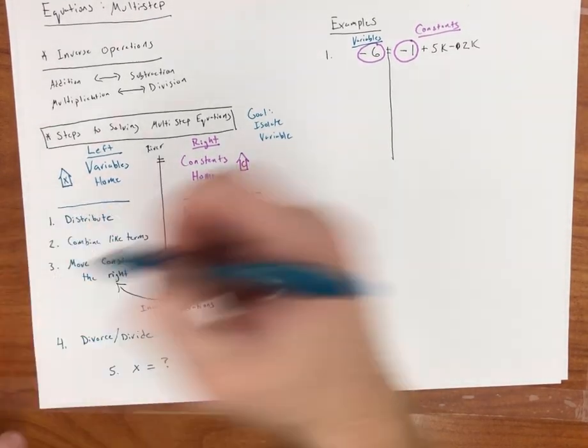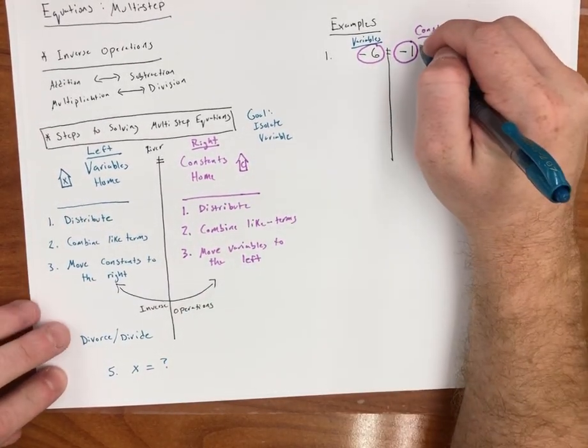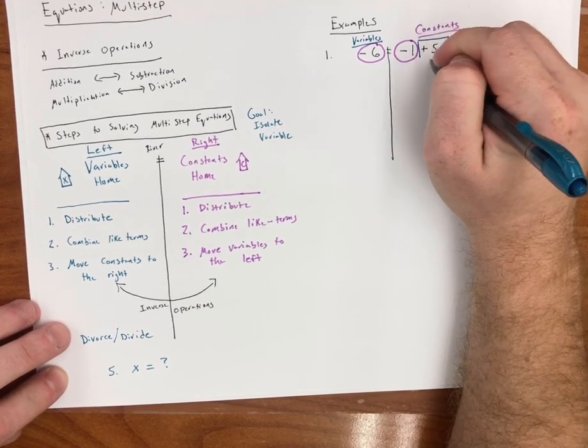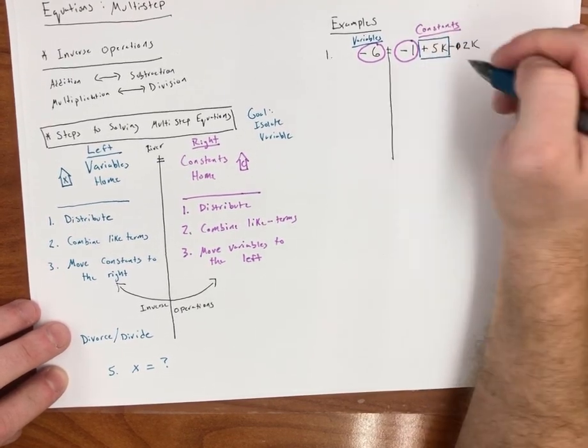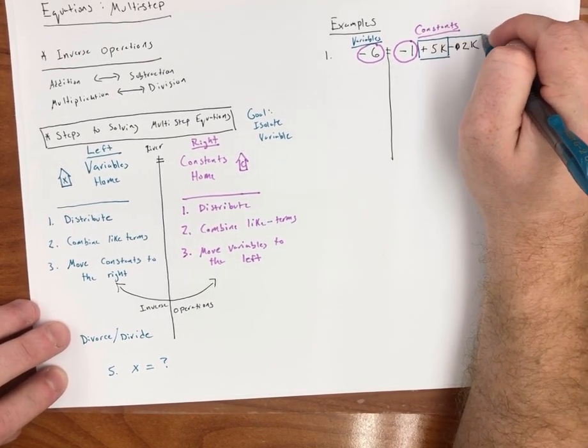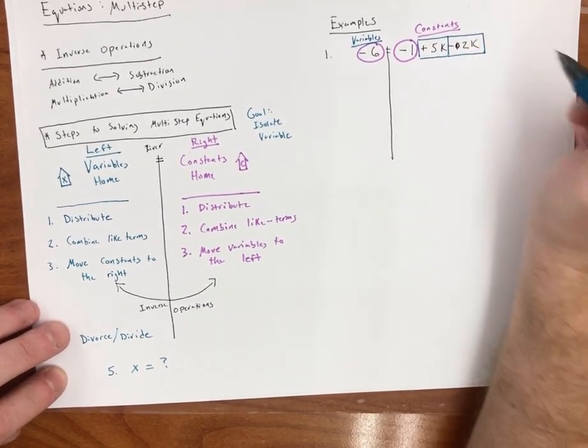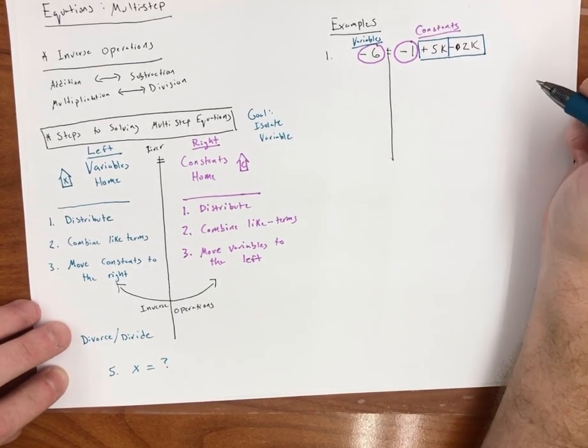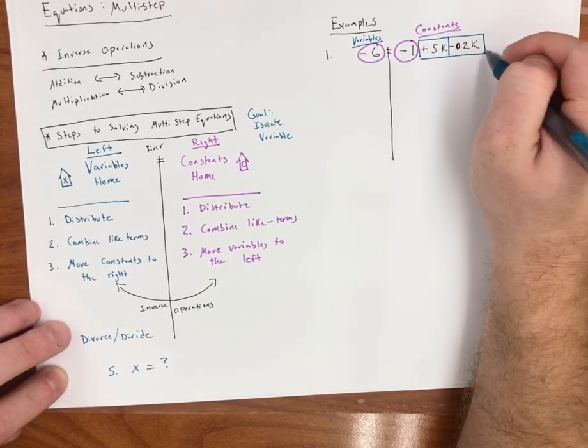Alright, now I need to go through and find my variables. My variables are right here. 5k plus 5k. Remember, I have to take the sign and I'm boxing my variables. And the last thing I'm doing is I'm boxing my other variable I see. And that's negative 2k. Remember, I'm boxing in that sign.